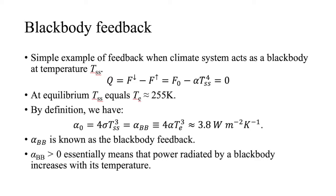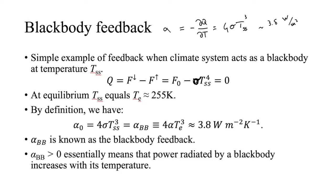Apologies — that alpha should be sigma (Stefan-Boltzmann constant). If we don't have an atmosphere, Q has a clear, simple dependence on temperature. The climate feedback parameter alpha is then minus dQ/dT, which equals 4σ·T_ss³, approximately 3.8 W/m²/K. This is called the black body feedback.